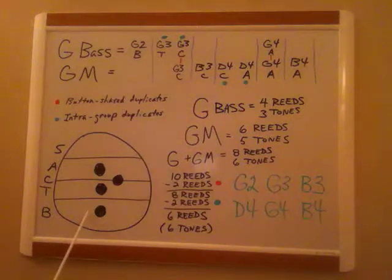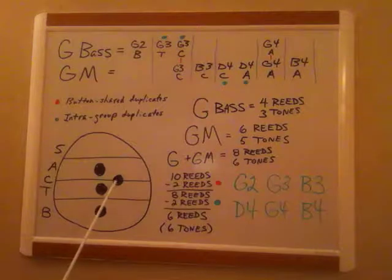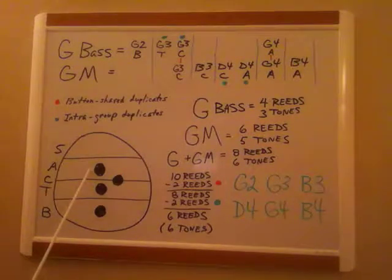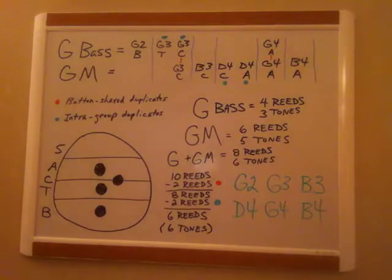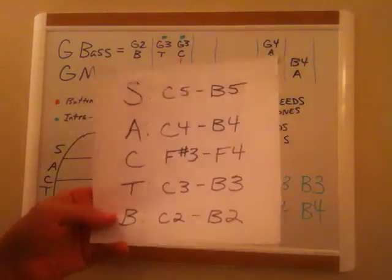So you have these dots indicating which reed sets are being used. For example, here's the bass reed set, the tenor reed set, contralto reed set, and the alto reed set.